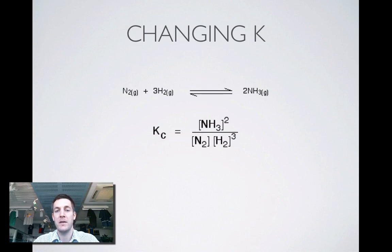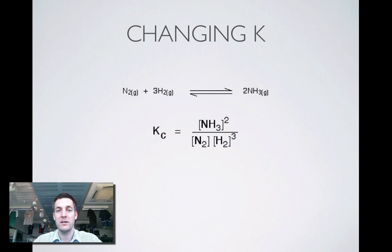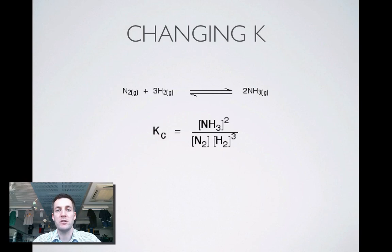To summarise: you should know how to write an equilibrium constant expression from an equation, and know that K is only affected by temperature — not by other changes in conditions. You don't need to calculate K values in a WJEC exam, but you should be able to comment on the position of equilibrium based on the size of K: a small K means lots of reactants and few products; a large K (bigger than one) means more products than reactants. The next film covers industrial equilibrium processes.